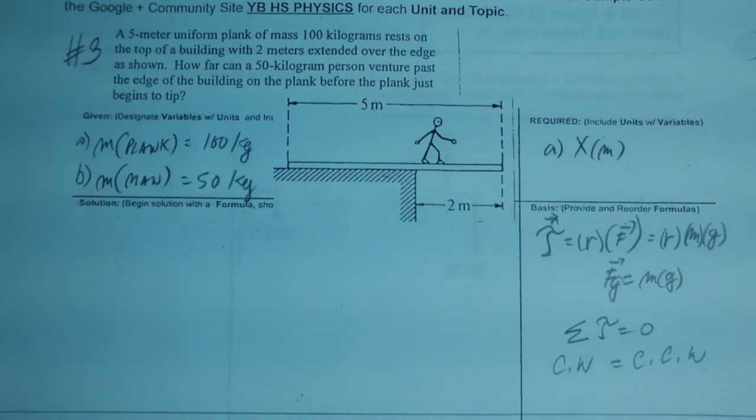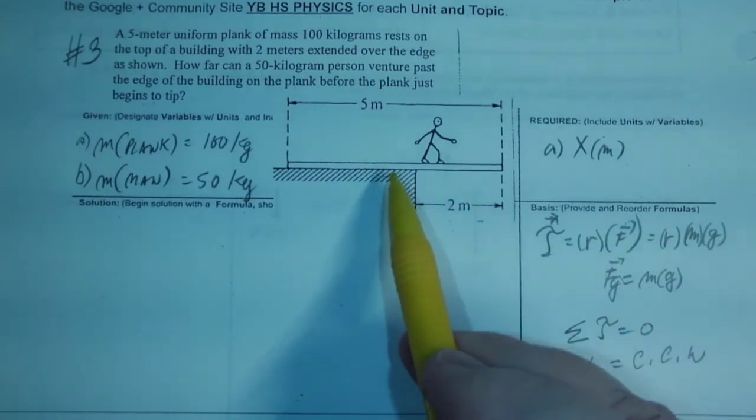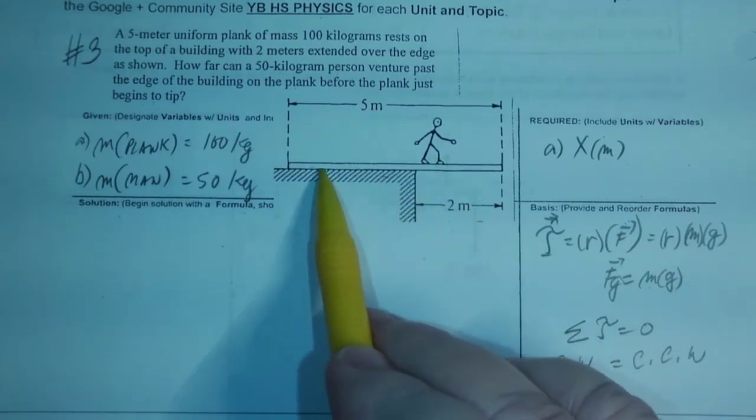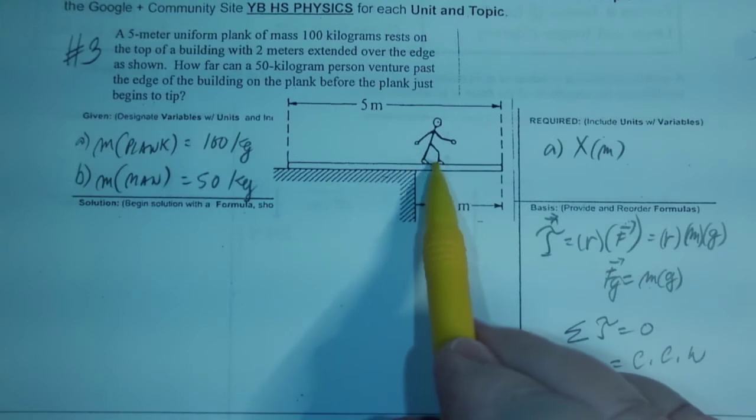Okay, so this is problem number four. This is a man, and this is the edge of the building. There's a plank and he's walking the plank.